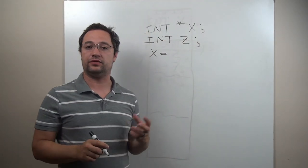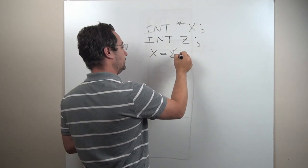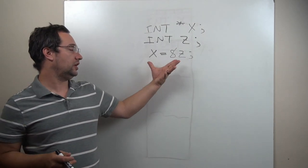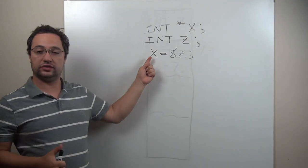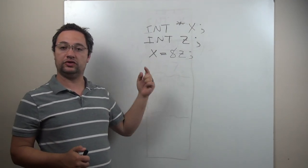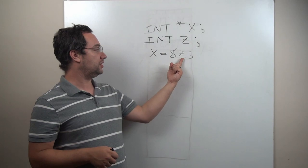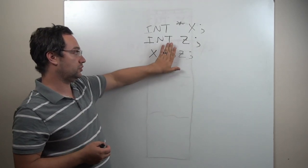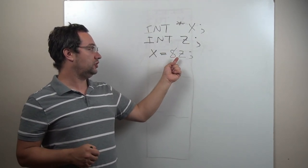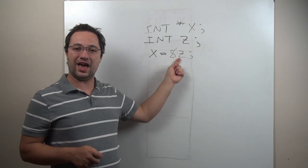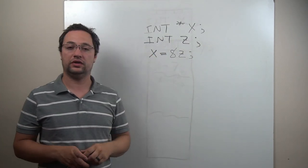There is a special little character for this — the ampersand. If you go `x = &z`, this is a correct statement. x is a pointer and it's looking to receive an address. What the ampersand does is, instead of giving us the number stored in z, the ampersand tells it to give me the address of z — tell me where z is located. And then that value gets stored in x.